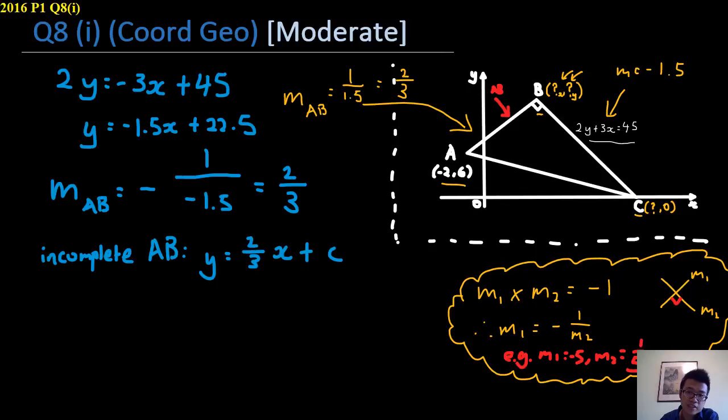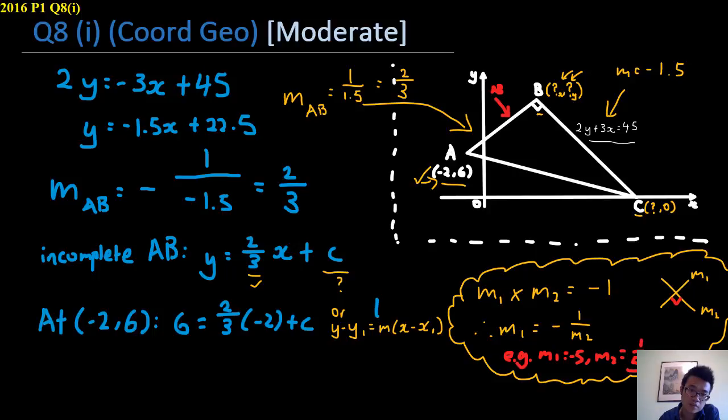But you realize this equation is still not complete. It lacks c, although we have m, but we still don't know c. So let's sub the known point A inside over here, since you already know this point is along AB. Alternatively, you can just use this equation as shown in the 10-year series, and you still get c equals to 22 over 3.